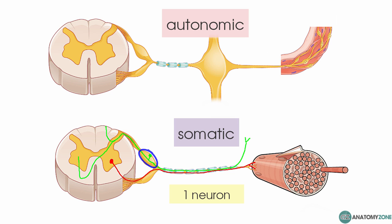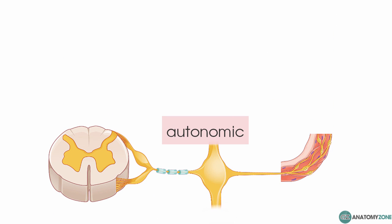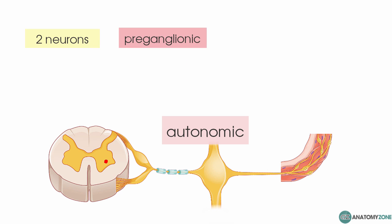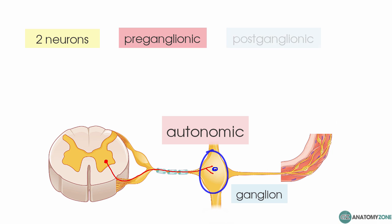The efferent component of the autonomic nervous system is different — there are two sets of neurons between the CNS and the PNS. The first is called the pre-ganglionic neuron, which leaves via the ventral horn, exits along the ventral root, and then forms a synapse in a ganglion. A ganglion is simply a collection of neuronal cell bodies outside the central nervous system. This pre-ganglionic neuron synapses onto the post-ganglionic neuron, which then innervates the target organ.